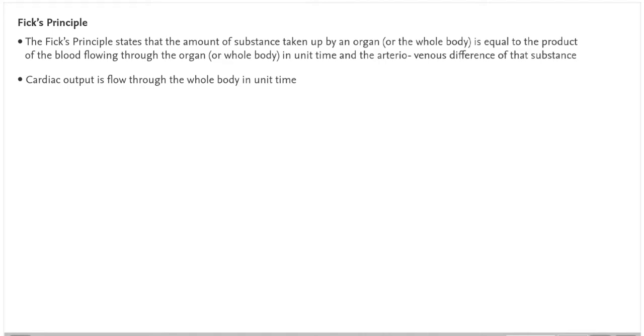Cardiac output is flow through the whole body in unit time. To measure cardiac output by the Fick principle, the rate of oxygen absorbed by the whole body is measured and the following formula is used.